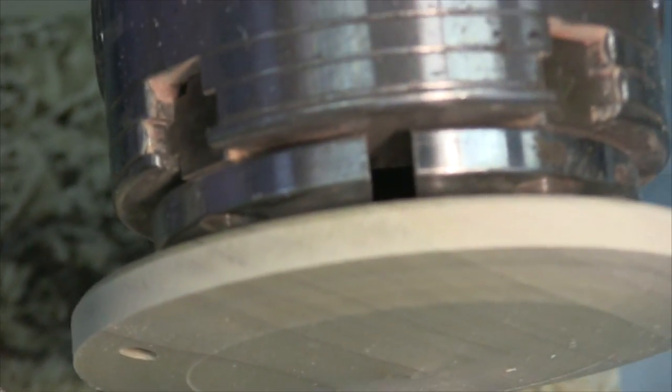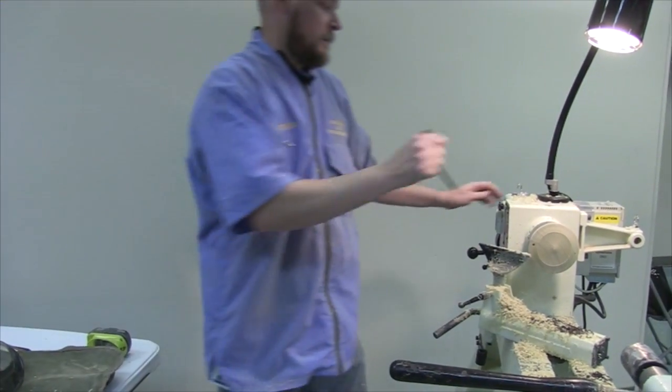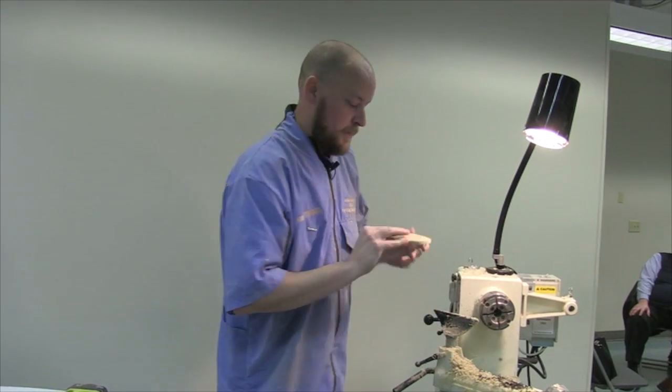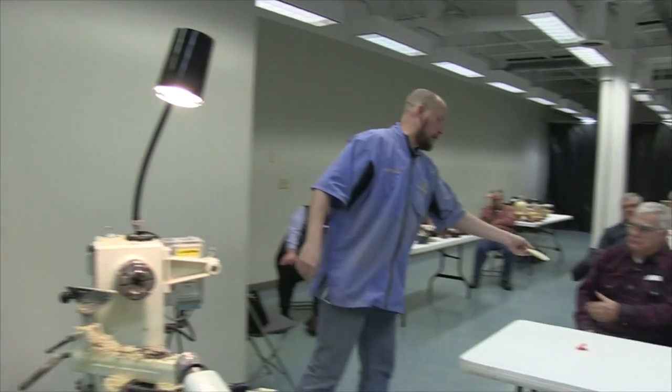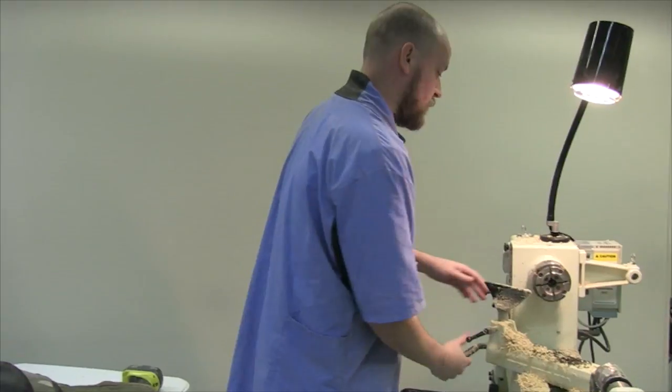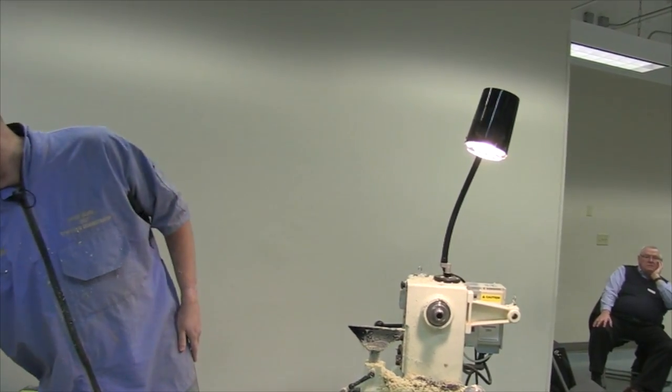One last thing I do like to do with these very carefully is I will put a little bit of a chamfer. That's where the top and the body of the salt cellar are going to go together. I do like to make a little bit of a chamfer there, so it ends up being kind of a little V groove, half on the lid and half on the body. Helps hide any little inconsistencies.